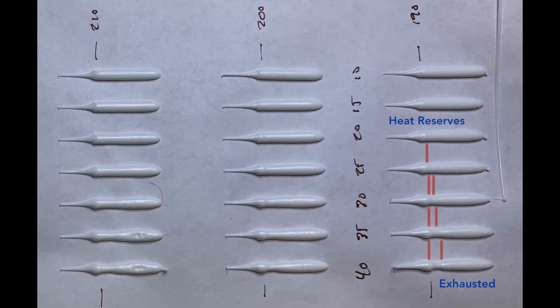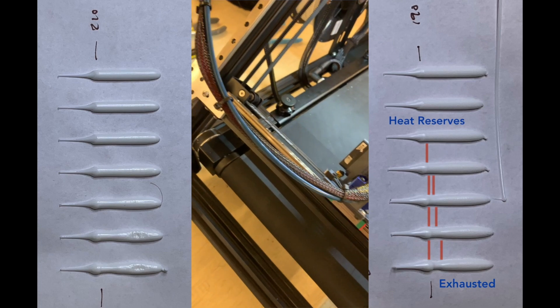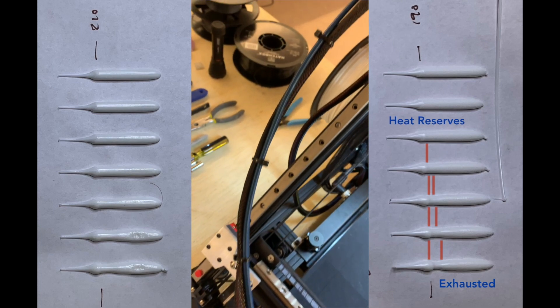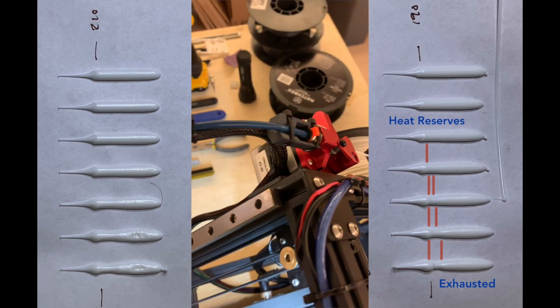Let's look at what happens when you push extrusion to the limits. As filament moves through the hot end, it pulls heat out. At some point, the filament draws more heat out than the heater cartridge is putting in. And at this point, the flow rate slows and the filament begins to create pressure in the Bowden tube. This additional pressure on the Bowden tube walls also creates friction, which further reduces the flow rate.